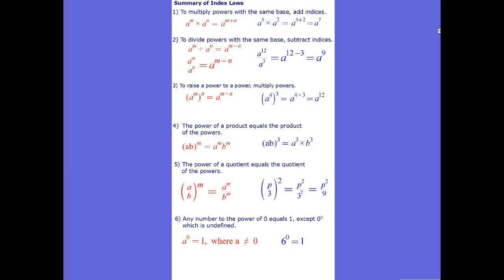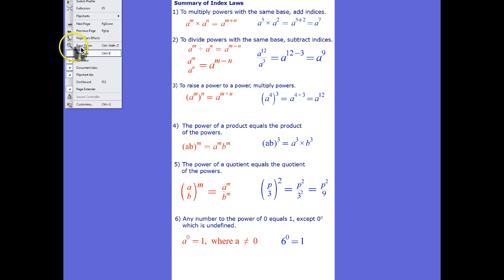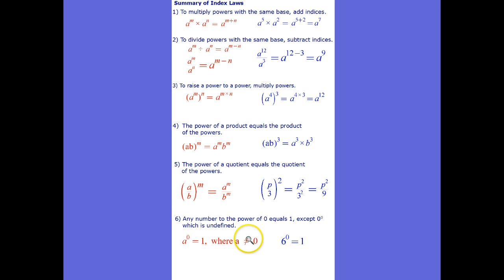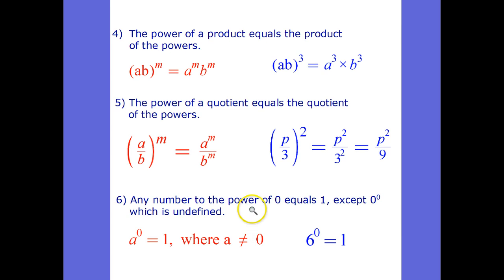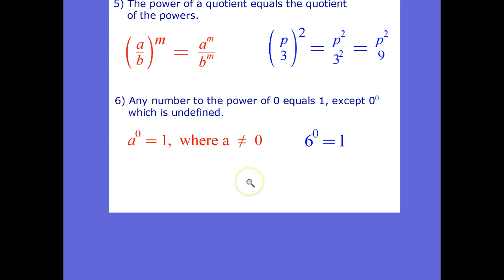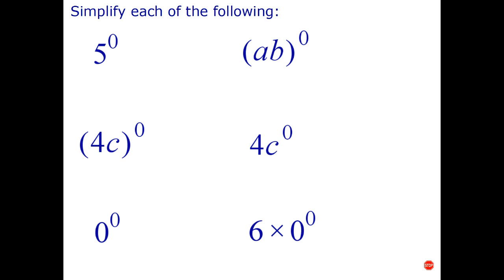Math error. So index law number 6 is any number to the power of 0 equals 1 except 0 to the 0 which is undefined. And algebraically a to the 0 equals 1 where a doesn't equal 0. And there's an example just there. So let's go ahead and apply this to a couple of questions.